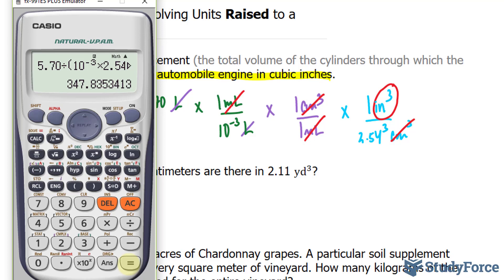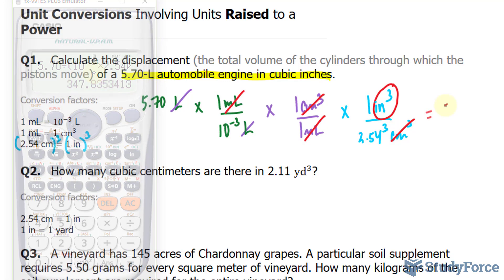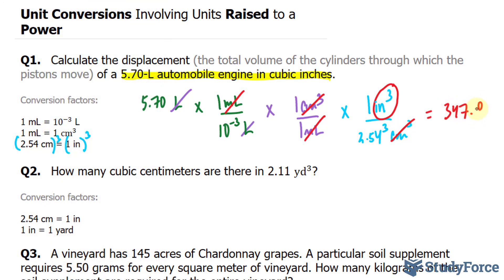This gives us the following: 347.835. Now we're not taking into account significant figures yet, so I'll just write this out - 347.835.